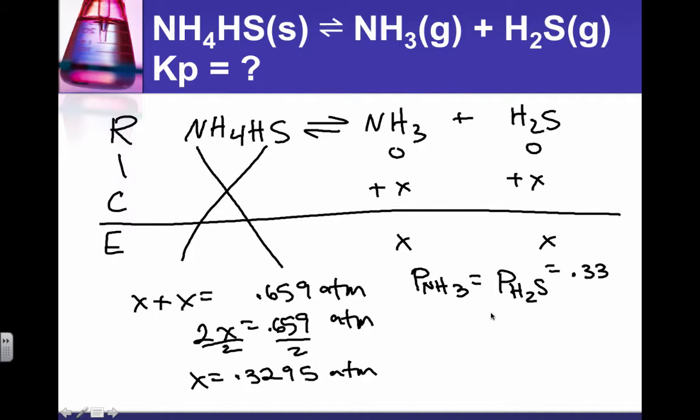And then Kp is the pressure of ammonia, not squared, just the pressure of ammonia, times the pressure of hydrogen sulfide, and that is 0.330 times 0.330.